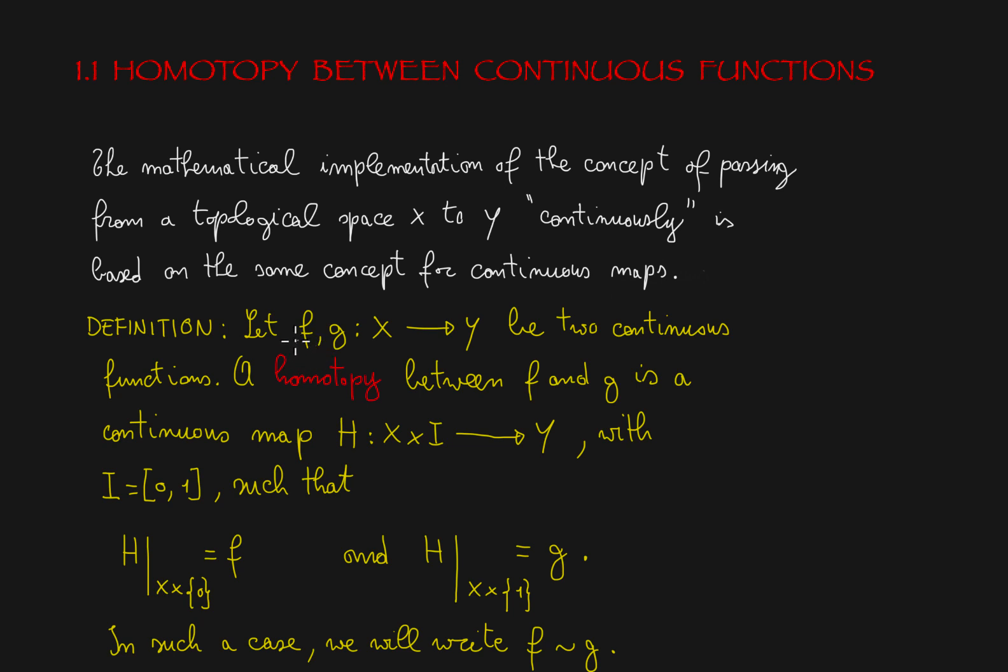Definition: let f and g be two maps from x to y. A homotopy between f and g is a continuous map h from x cross I, where I is the unit interval, to y, with the following properties.